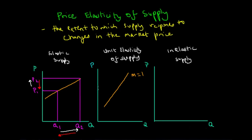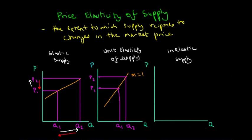If the price of a certain good or service starts at P1, the corresponding quantity would be at Q1. Now if the price increases to P2 for whatever reason, the quantity supplied would also increase to Q2. If we assume the difference between P1 and P2 is the same as the difference between Q1 and Q2, we can see that the increase in price corresponds to a proportionally similar increase in quantity supplied.